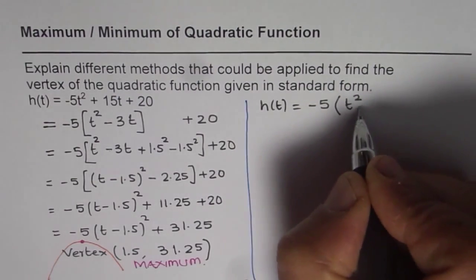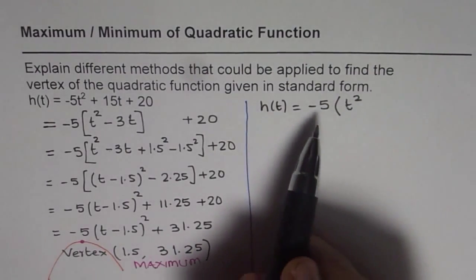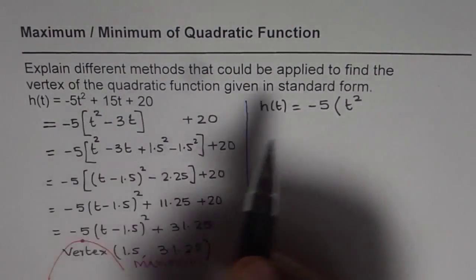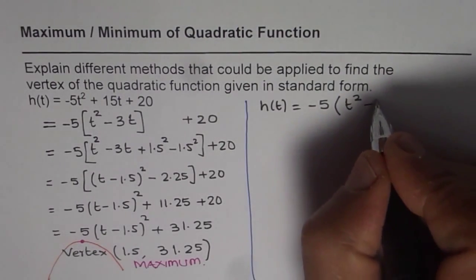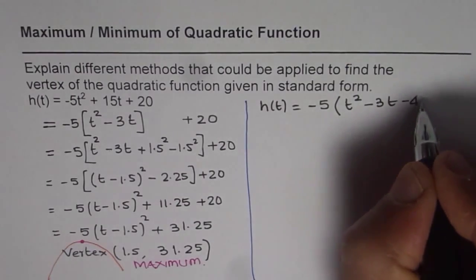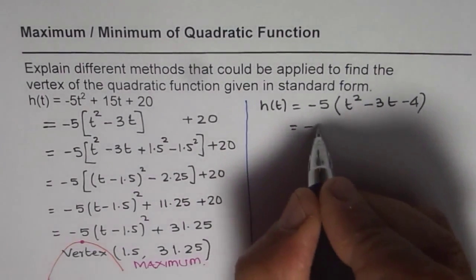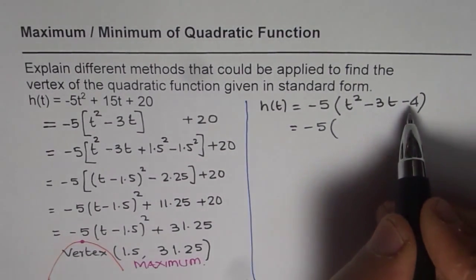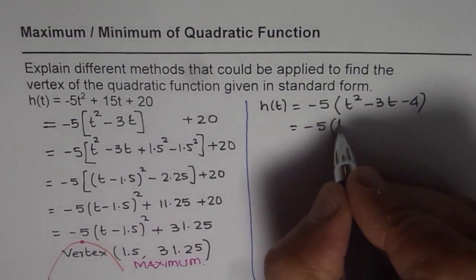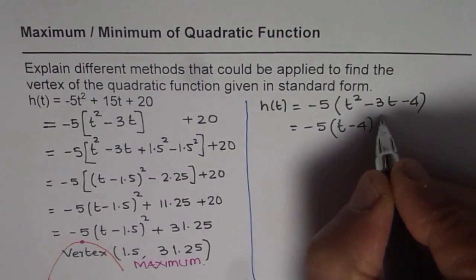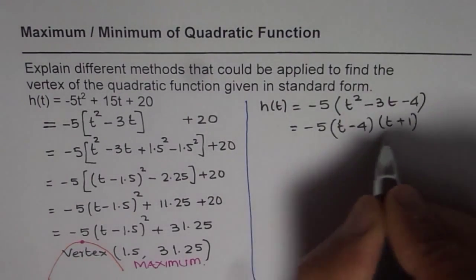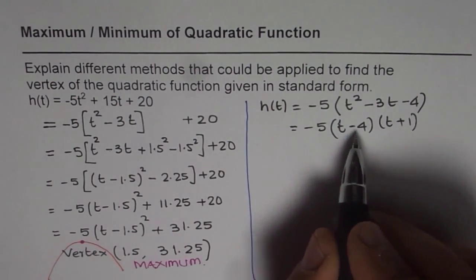Now if I factor -5, we have t² - 3t and that 20 will become -4. We are looking for two numbers whose product is -4 and sum is -3. So the numbers are (t - 4)(t + 1). So that gives you two zeros.